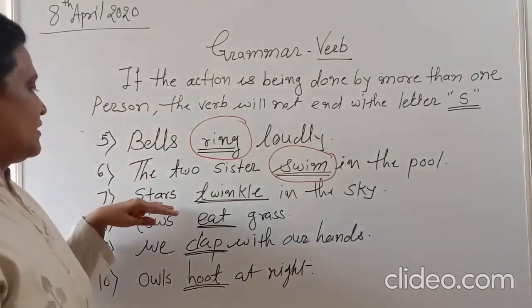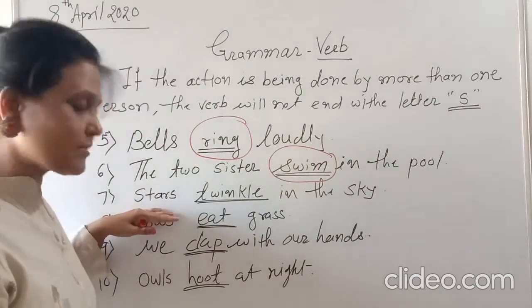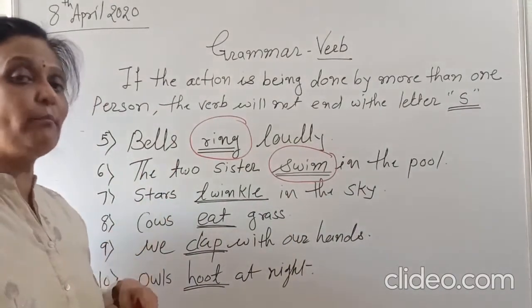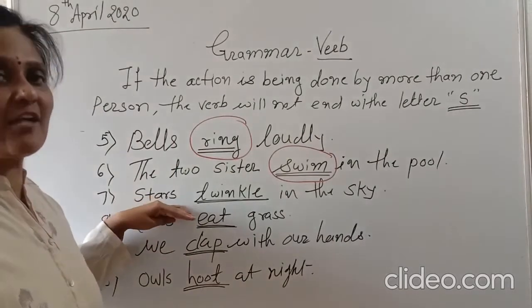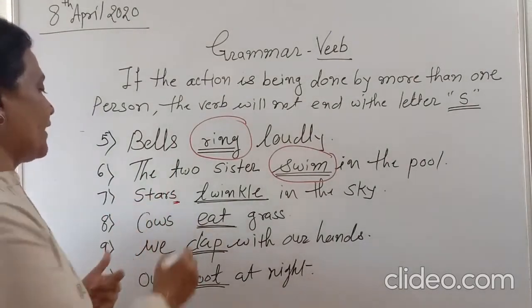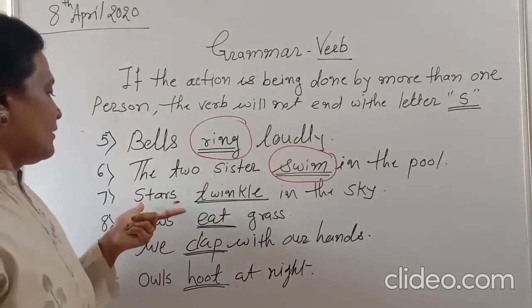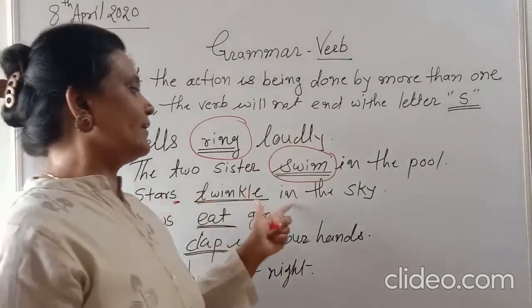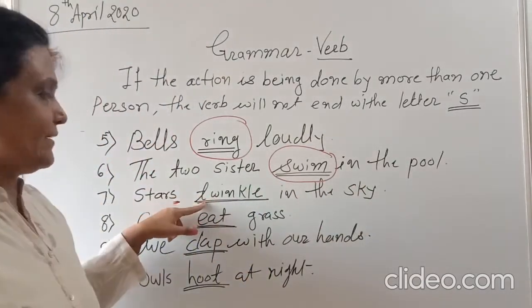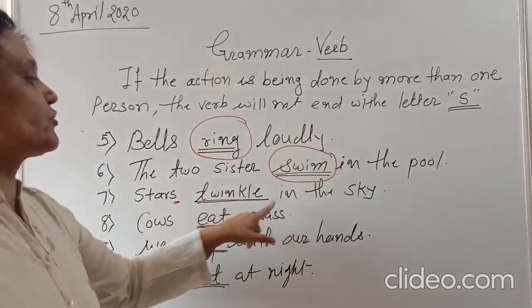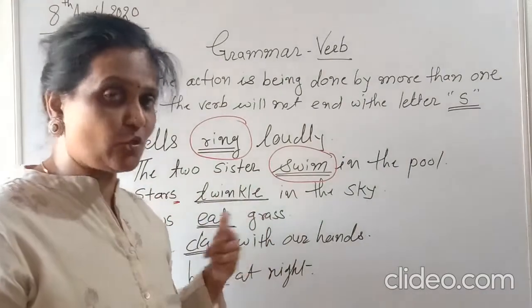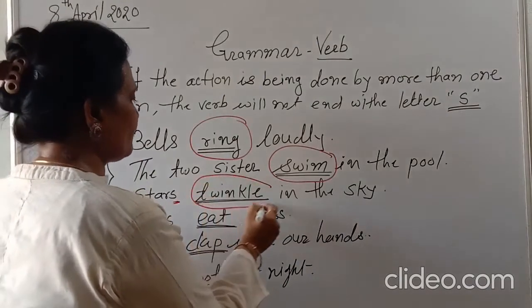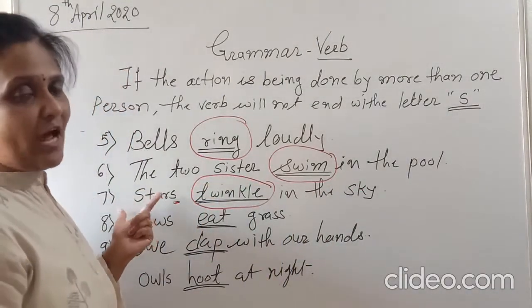Next: Stars twinkle in the sky. Is it one star twinkle in the sky? No — many stars. Many stars with 's' here. So many stars are here. Stars twinkle in the sky. Twinkle is the action word. We cannot use 's' here — stars twinkle, not 'twinkles' — because in this sentence there are many stars, more than one. So stars twinkle in the sky.